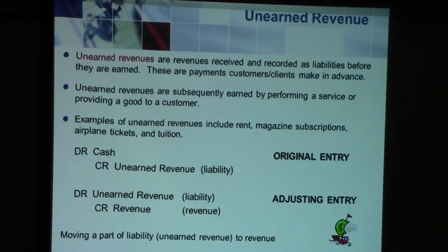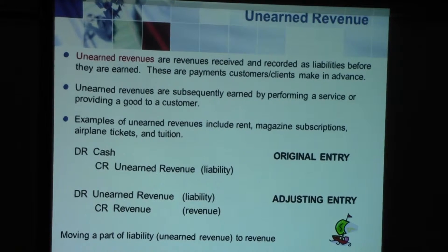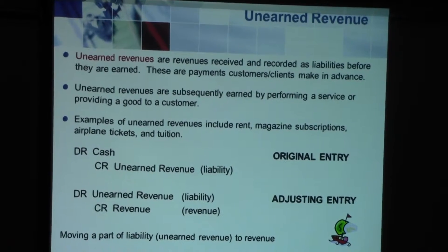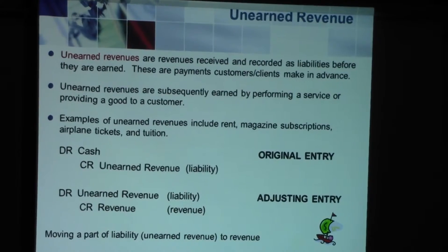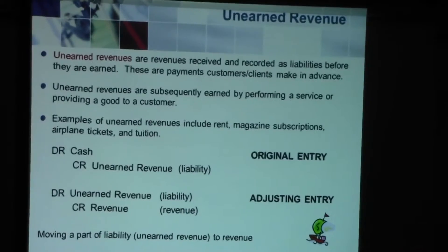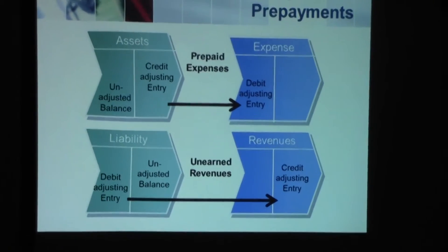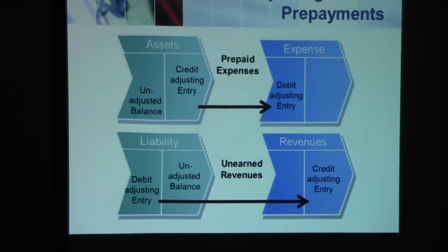Notice this trend: prepaid expenses were an asset account — they move from assets to expenses. Unearned revenue is a liability account — it moves from liability to revenue. So expenses come from assets and revenues come from liabilities. Notice this trend in adjusting entries. Assets move to expenses and liabilities move to revenues.